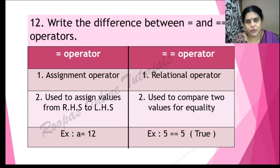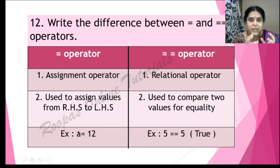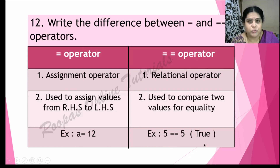Write the difference between = and == operators. The single equal (=) is an assignment operator, used to assign a value from the right-hand side to the left-hand side — for example, a = 12 puts the value 12 into variable a. The double equal (==) is a relational or comparison operator — it compares the left-hand side and right-hand side; if both are the same you get true, otherwise false. For example, 10 == 5 gives false. Hope you liked this video — please share and subscribe, and all the best for your upcoming exams!